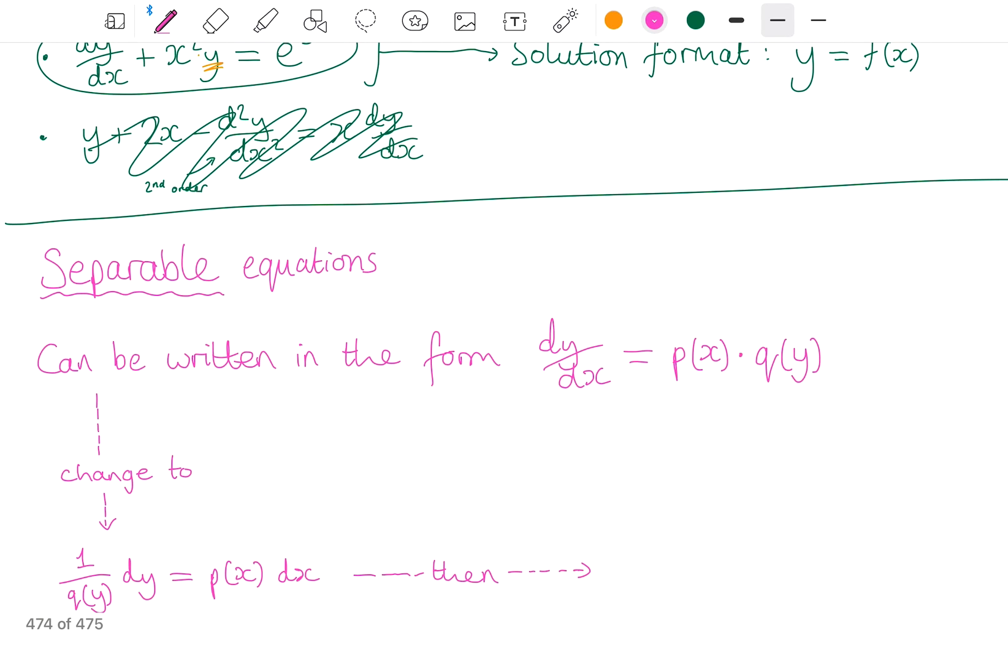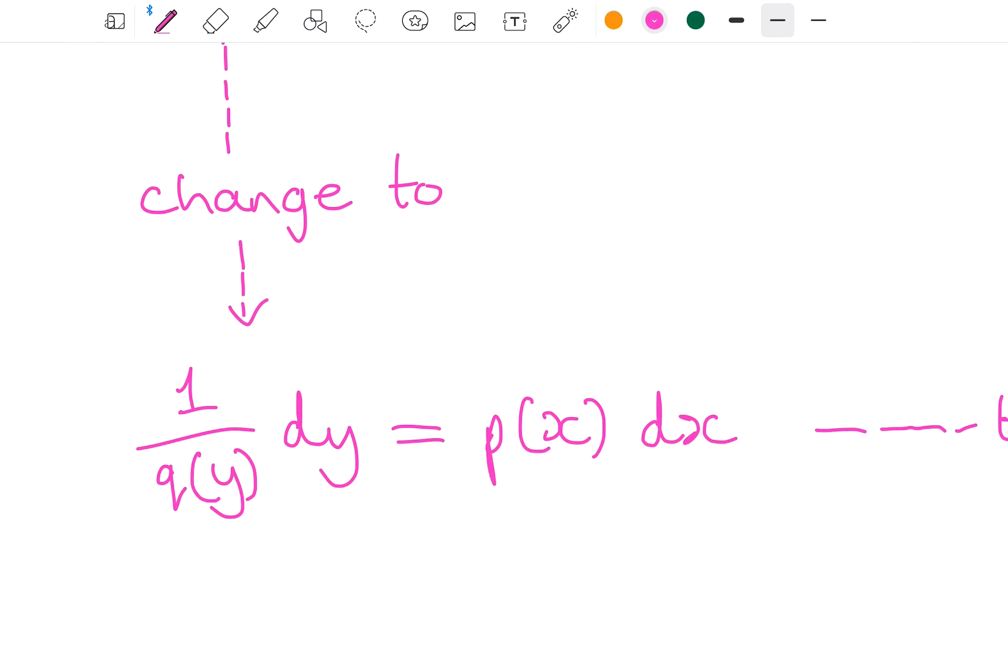And we say that it can be written in that form. It might not be presented in that form perfectly at the start of the question. What we're going to do if it's in that form is divide by q of y and also multiply by dx.